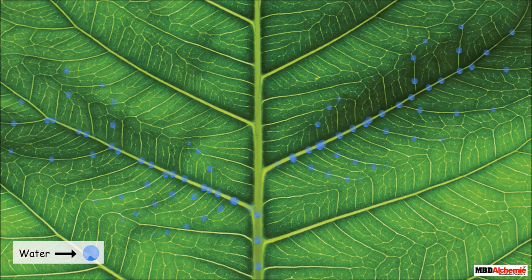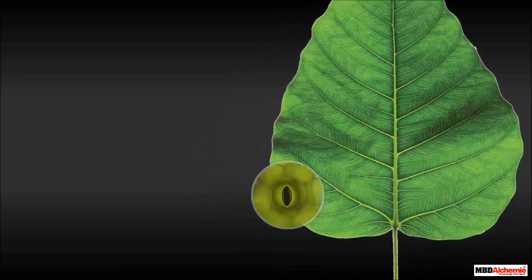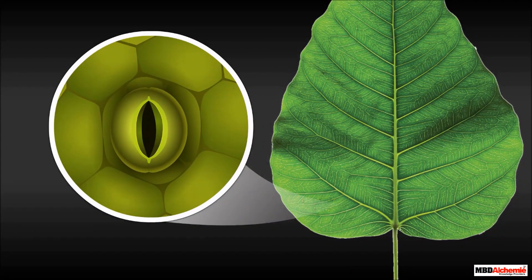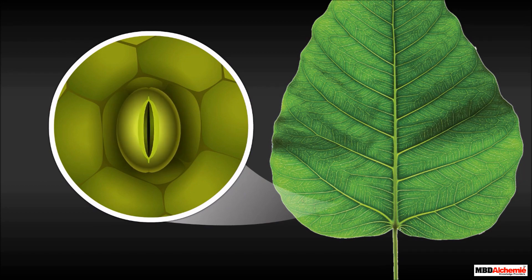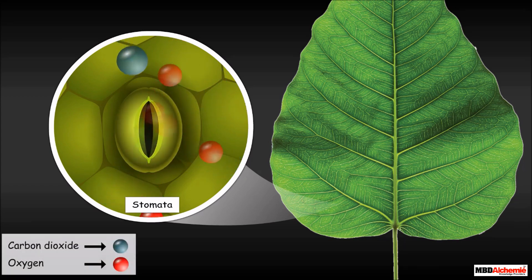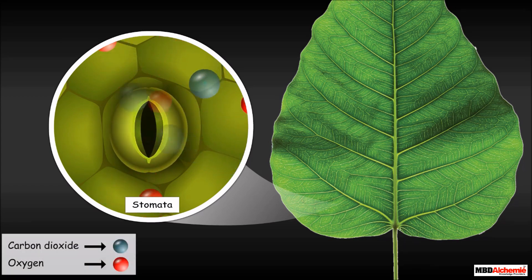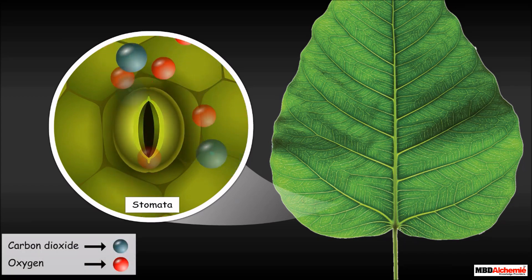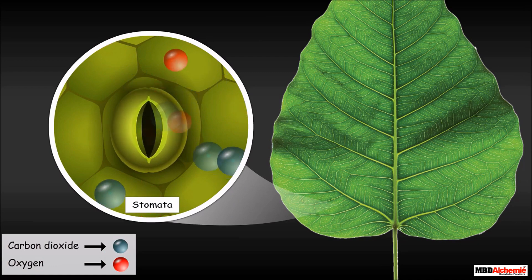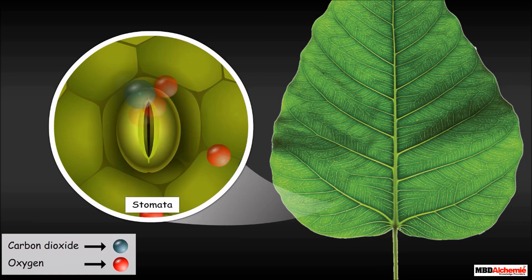They also carry water to the different parts of a leaf. A number of tiny openings are present on the surface of a leaf. These tiny openings are called stomata. They help a leaf to exchange gases. They take carbon dioxide gas from the air and release oxygen.